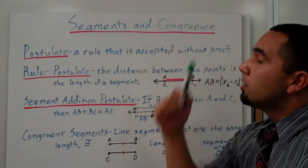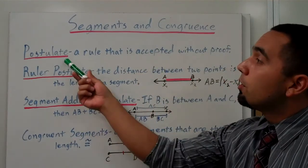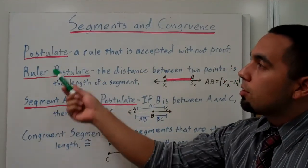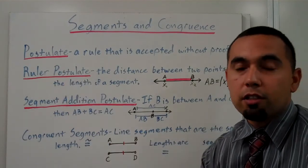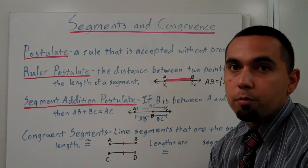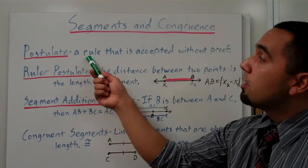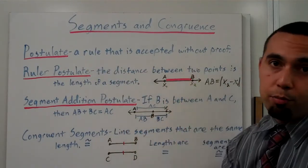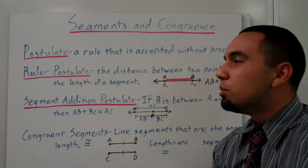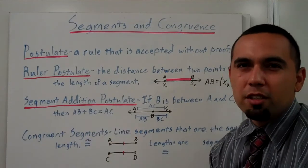Okay, so this is segments and congruence. First off, we've got to start with some definitions and terms. First one is postulate, and you're going to see this a lot in the geometry book. A postulate is simply a rule that is accepted without proof. It's something real simple, and we have two postulates here.